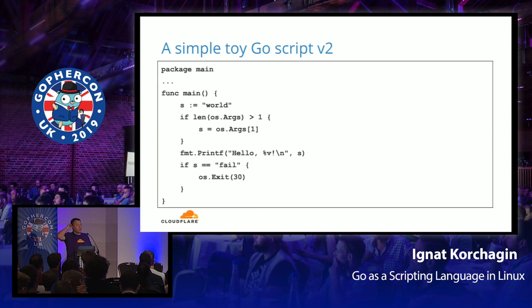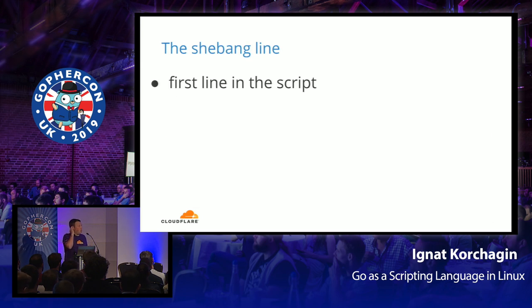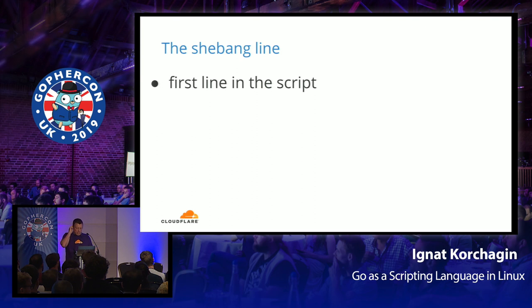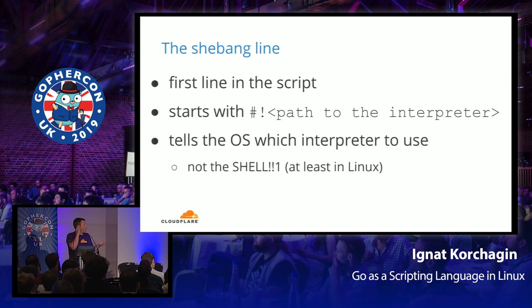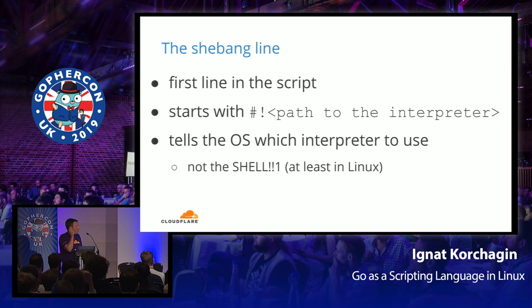We'll update our example to check all these capabilities — modifying the Hello World program to accept a command-line argument, and if you pass the string 'fail', it exits with status 30 instead of a successful exit status. For making a .go file executable on Linux, in the Unix world the answer is usually a shebang line. It starts with a hash and exclamation mark followed by the path to the interpreter. It tells your operating system which interpreter to use — not your shell, as I'll come back to later.